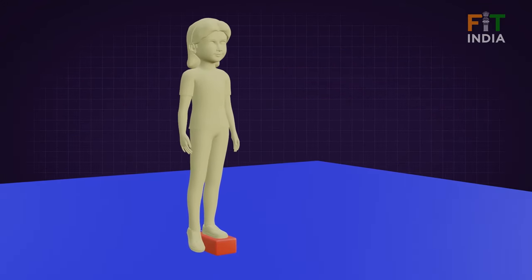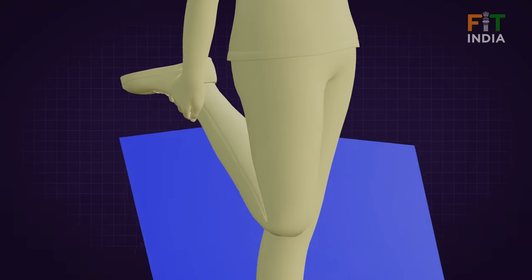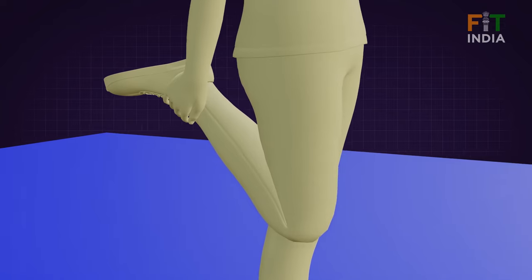The athlete keeps balance by holding the instructor's hand if required. The timer is started as the instructor lets go.